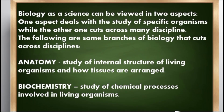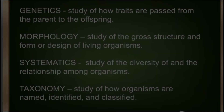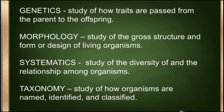Biology as a science can be viewed in two aspects. One aspect deals with the study of specific organisms, while the other cuts across many disciplines. The following are some branches of biology that cut across disciplines: Anatomy — the study of internal structures of living organisms and how tissues are arranged. Biochemistry — the study of chemical processes involved in living organisms. Genetics — the study of how traits are passed from parents to offspring. Morphology — the study of gross structure and forms or designs of living organisms. Systematics — the study of diversity of and the relationship among organisms. And Taxonomy — the study of how organisms are named, identified, and classified.